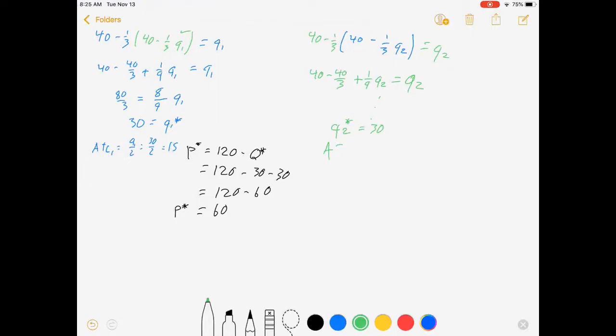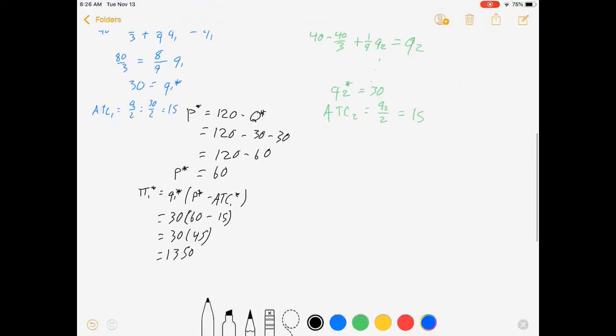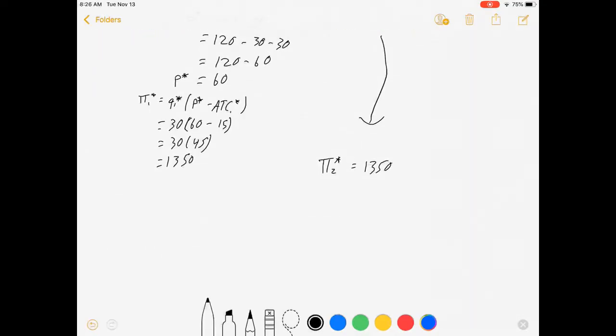Now we're ready to get each firm's profit. Profit for firm one is equal to the quantity times the price minus the average total cost, which is 30 times 45, which is 1350. Firm two is going to do the exact same thing, and you're going to get that profit for firm two is 1350.